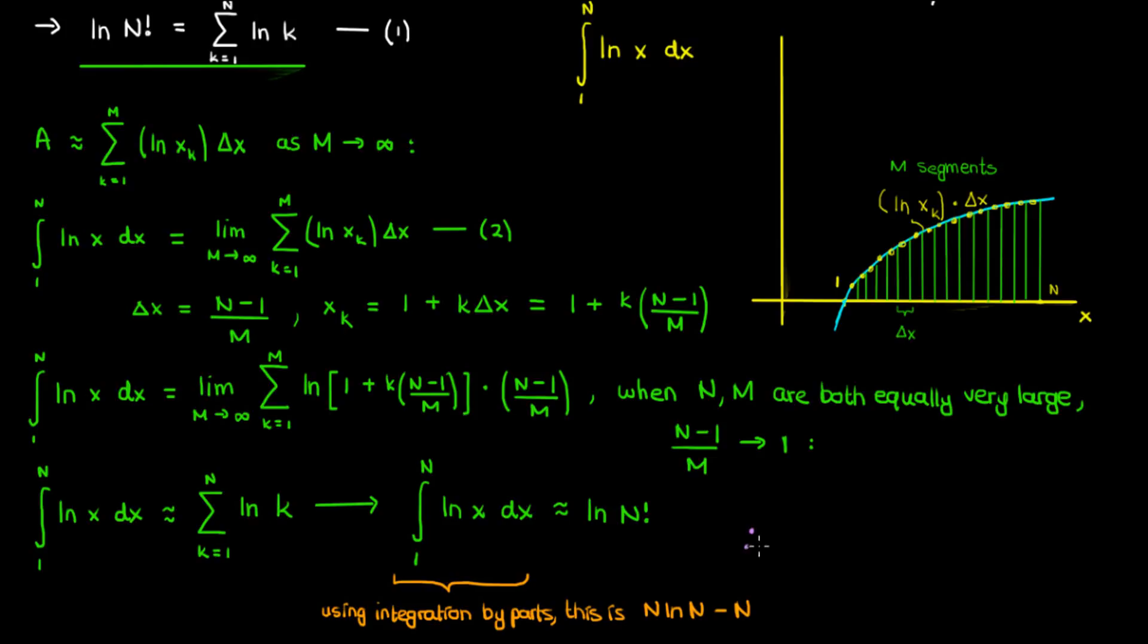And this gives you Stirling's formula: that the ln of capital N factorial is approximately equal to capital N times ln of capital N minus capital N for large enough capital N. Keep in mind that the larger your capital N is, the better this approximation will get.